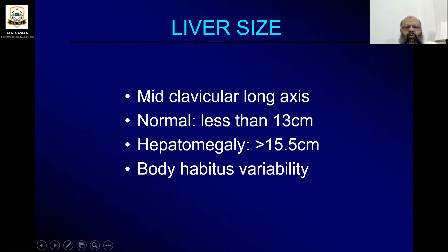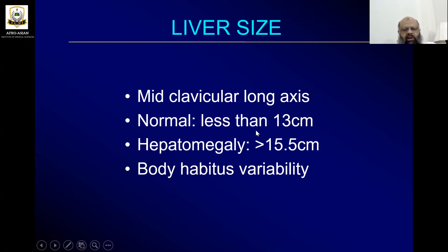For liver size, we measure at the mid-clavicular long axis. We place the transducer longitudinally, with the hand towards the upper side towards the axilla, at the mid-clavicular line. When we measure the long axis, the normal size is usually 13 centimeters, but we take it as normal up to 15.5 centimeters. The average in adults is 13 centimeters.